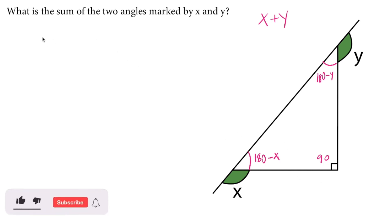Sum of these angles, 180 minus X plus 180 minus Y plus 90, should be 180 degrees from the triangle sum theorem.